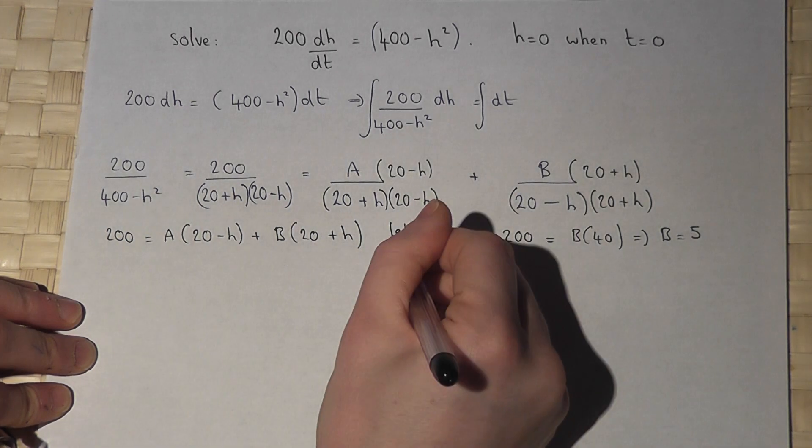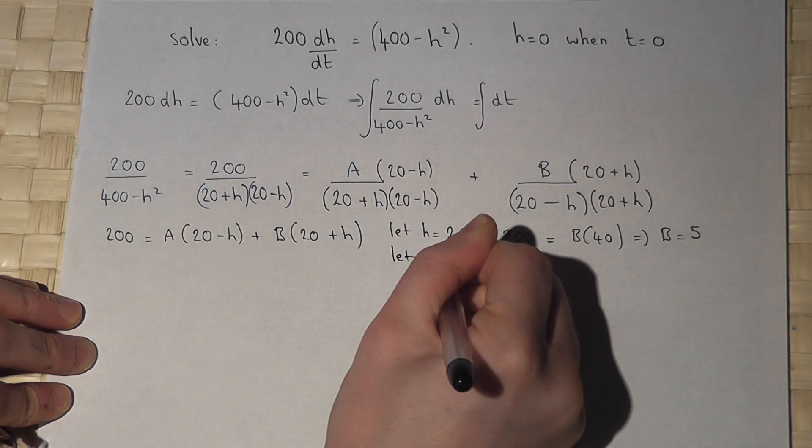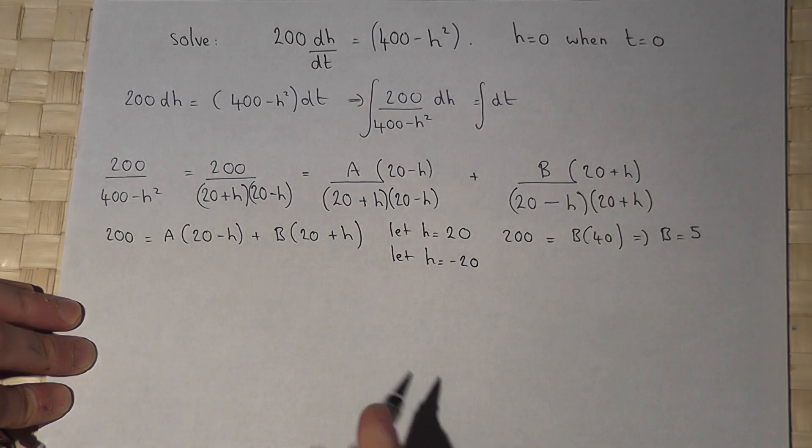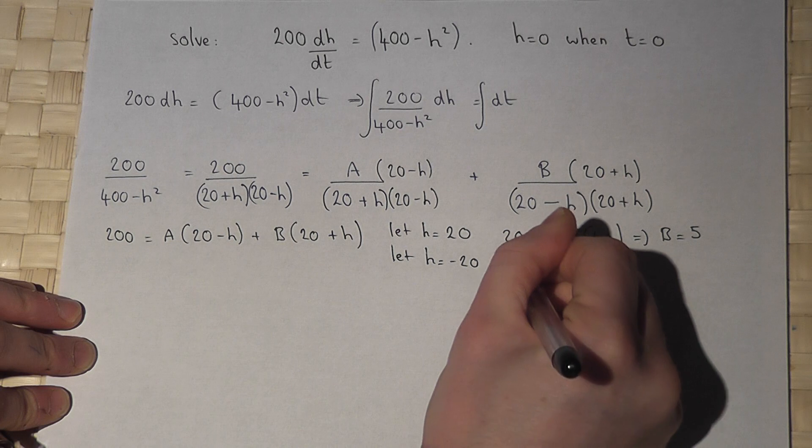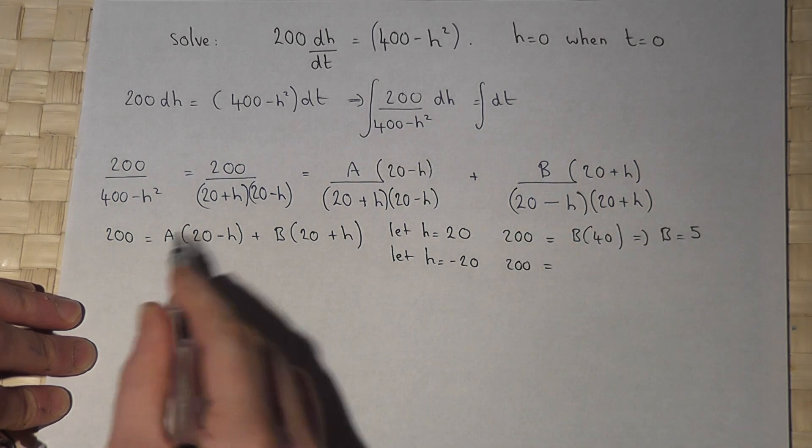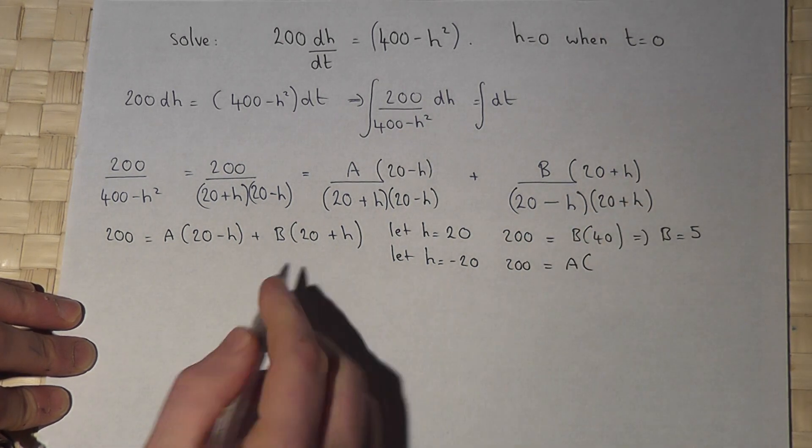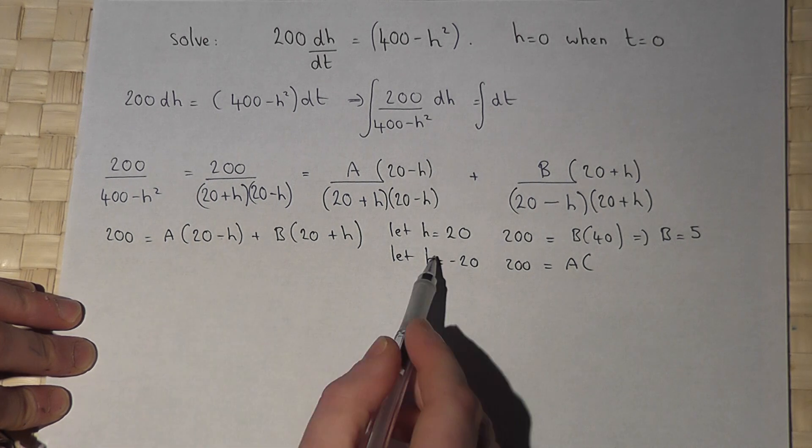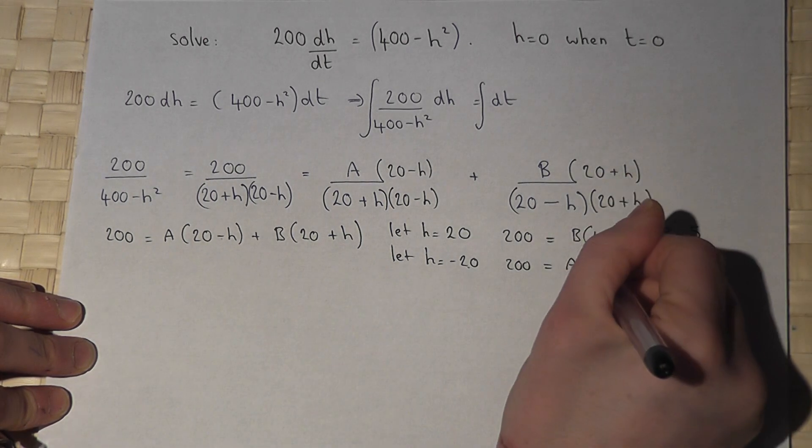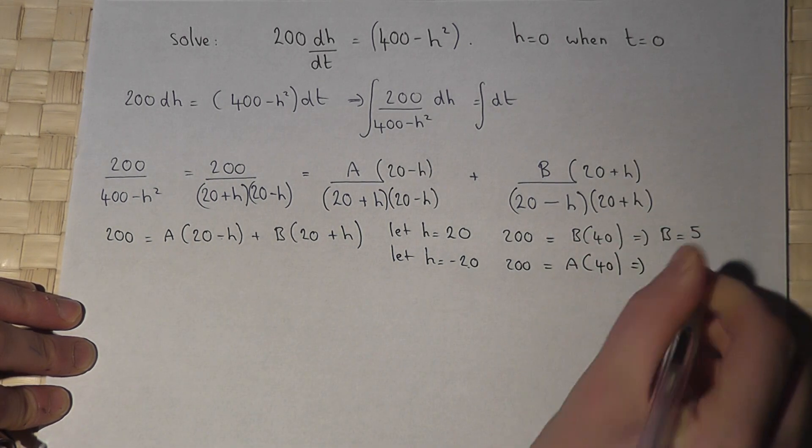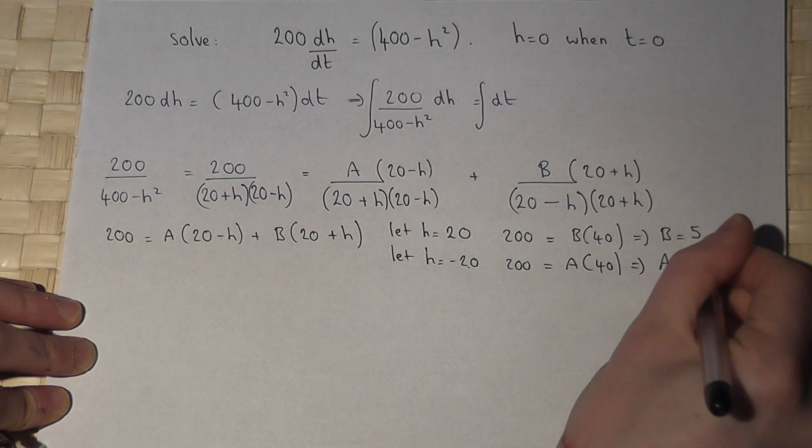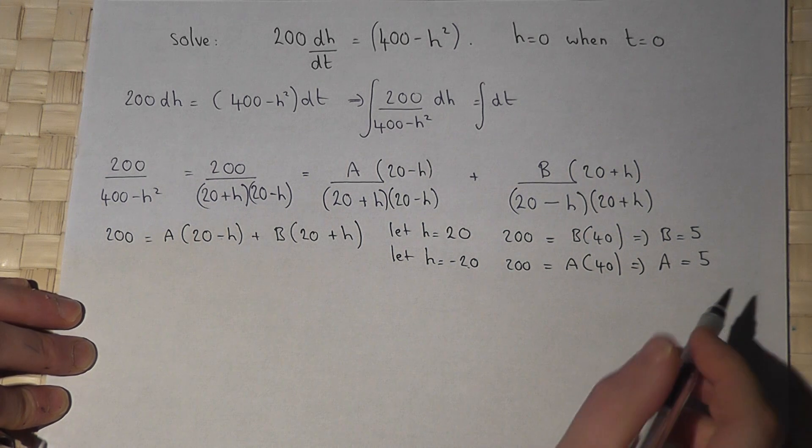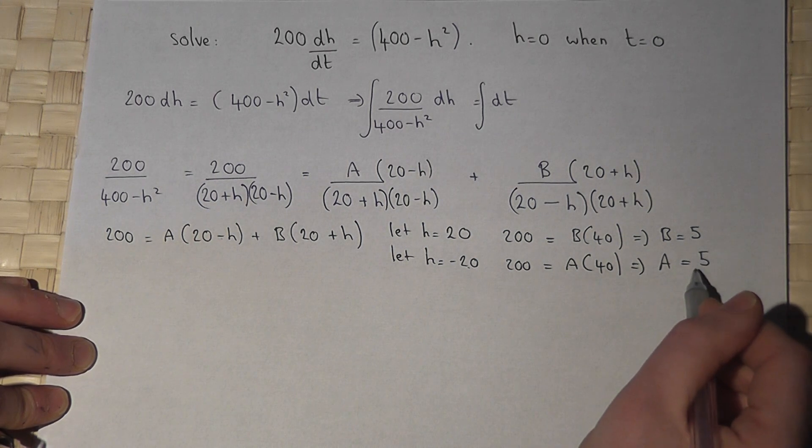If I then let h equal minus 20, then this bracket will cancel off. So again 200 equals this time A lots of 20 minus minus 20, which is 40. So again, A will equal 200 over 40, which equals 5. So I've now found A and B.